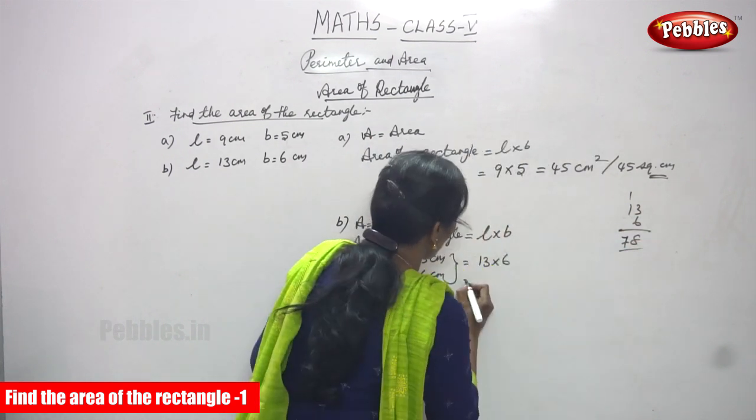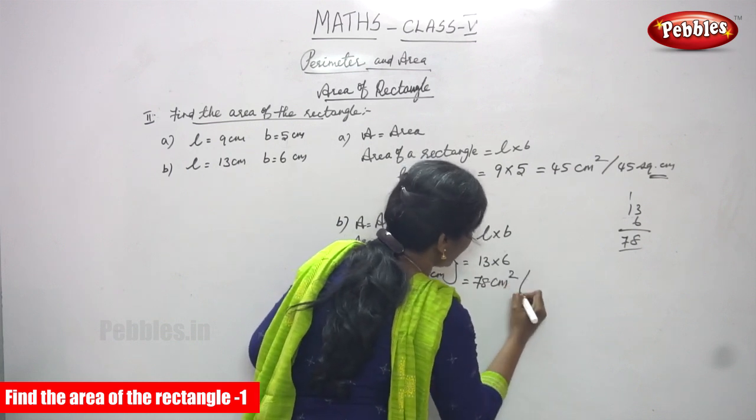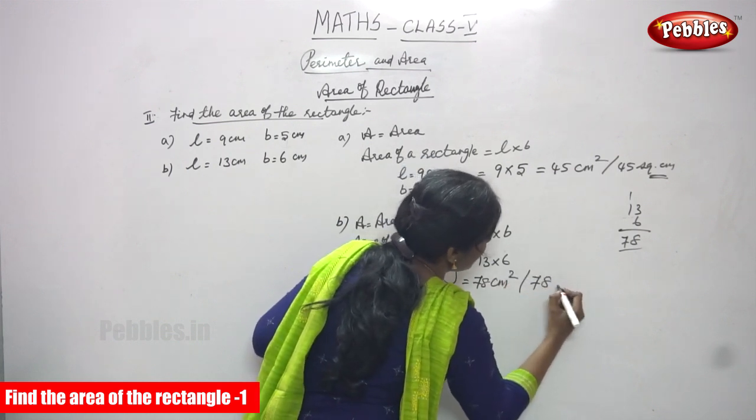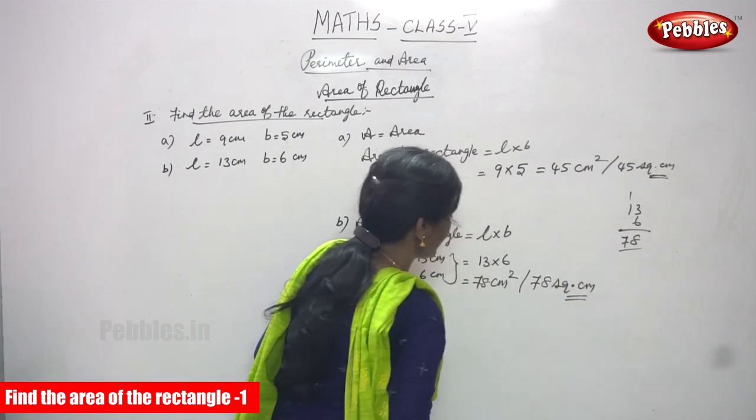So the answer is 78 cm in the unit, cm square or 78 square cm. This is the right answer.